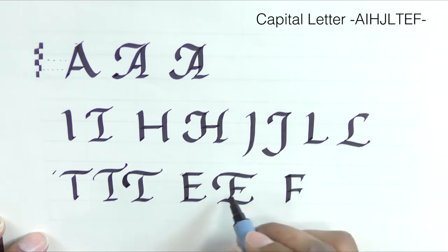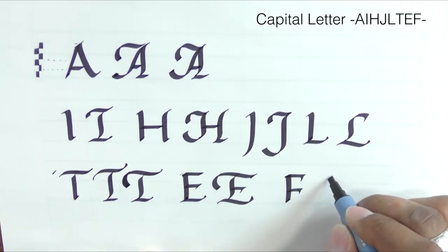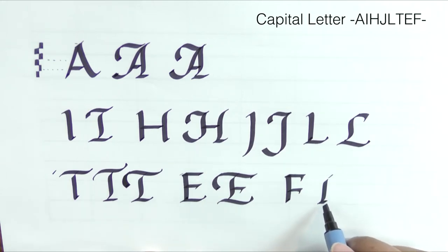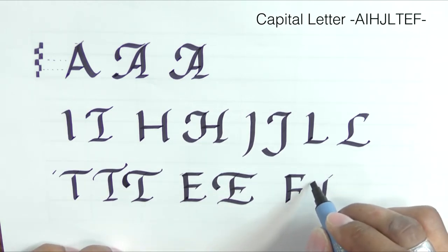The crossbar for the F is lower than the E. Notice I've made the little swash foot much shorter so it doesn't end up looking like an E.